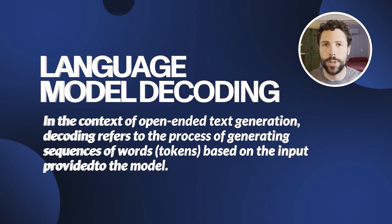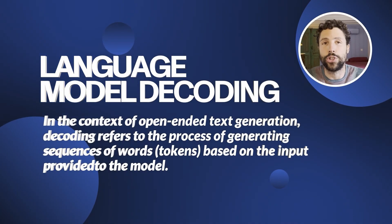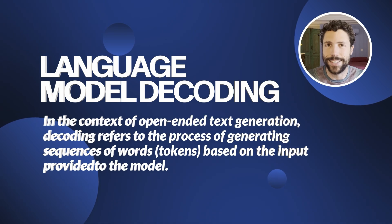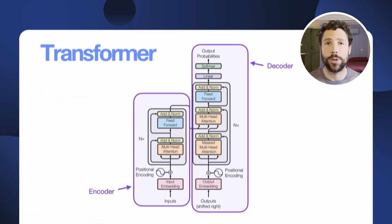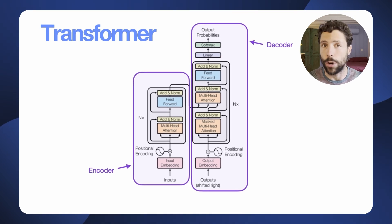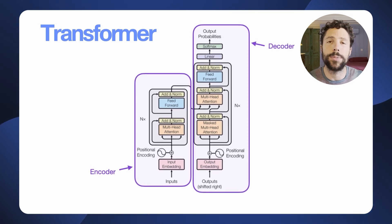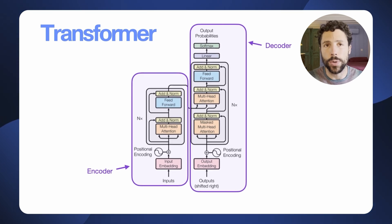Language model decoding is the process by which an LLM generates text — really the series of symbols or tokens that represent it. The transformer, which is the underlying architecture of all current language models, is a general tool that can input sequences of tokens and output sequences of tokens. Whether these tokens represent words, image data, genetic sequences, audio, or other forms of coherent signals is a matter of design.